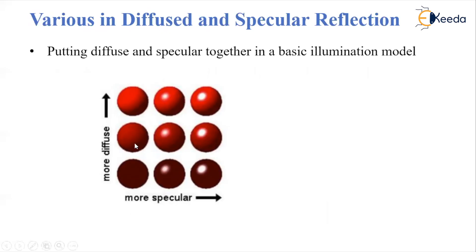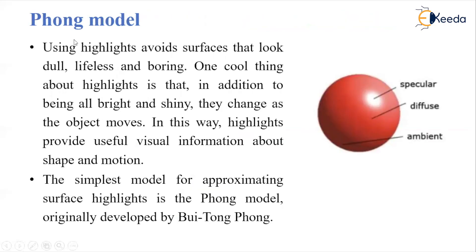We have seen diffuse reflection and specular reflection. If we put them together — diffuse and specular reflection in an illumination model — we will see such differences between them. The last component is the Phong model. The Phong model is a combination of all three components of the illumination model: specular, diffuse, and ambient.